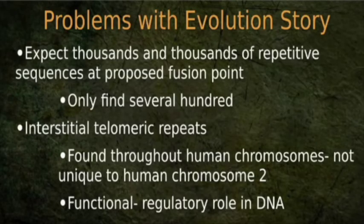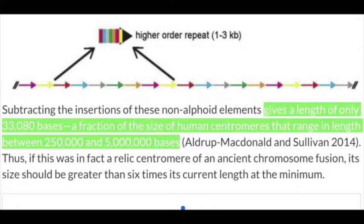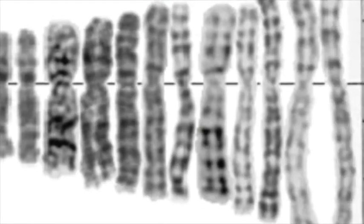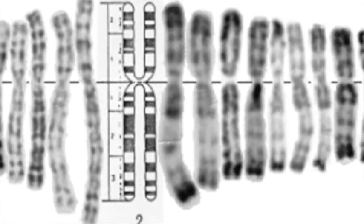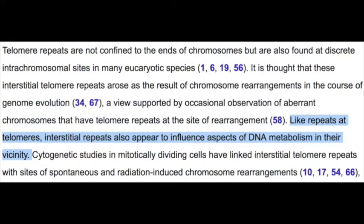First, we would expect thousands and thousands of repetitive sequences at the proposed fusion site but we only find several hundred. Thousands of intact telomere motifs at the fusion site would be expected if the evolutionary model was true — the exact opposite is what we see, falsifying the theory immediately. Second, interstitial telomeric repeat sequences are found throughout human chromosomes and are not unique to only human chromosome 2 — these repeats perform a functional regulatory role in DNA.